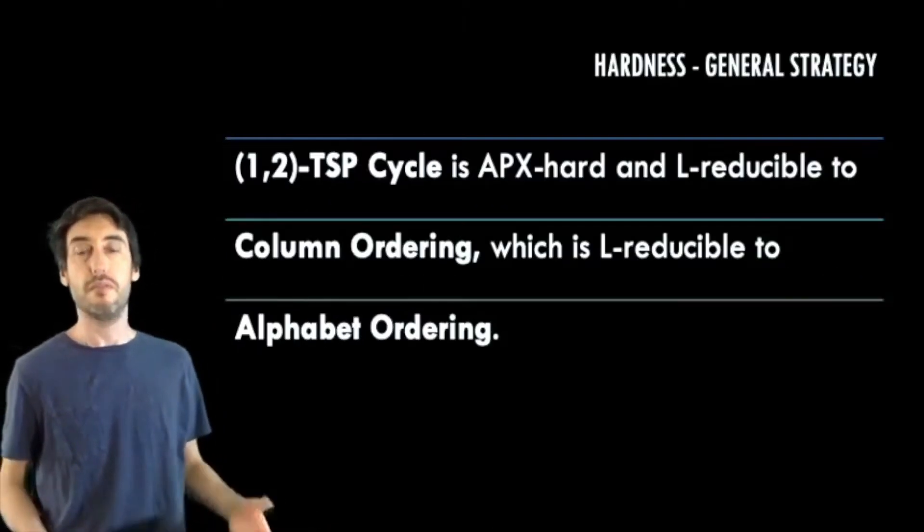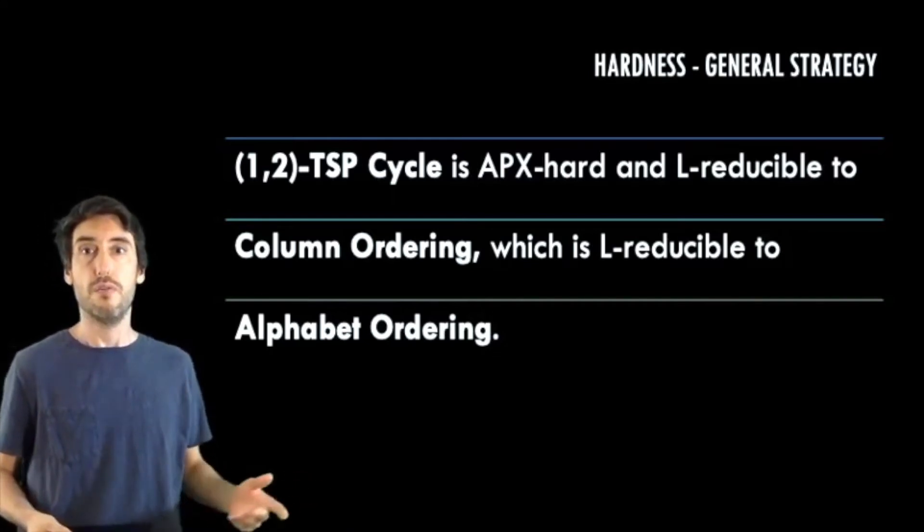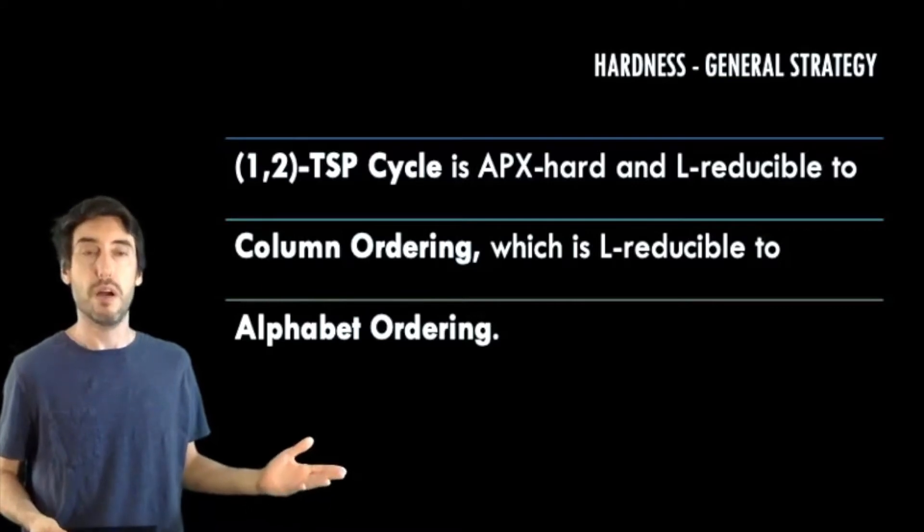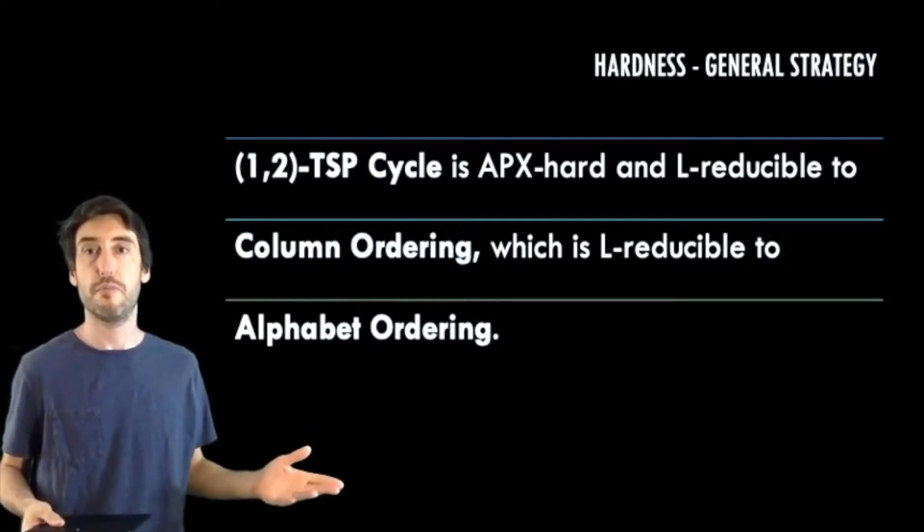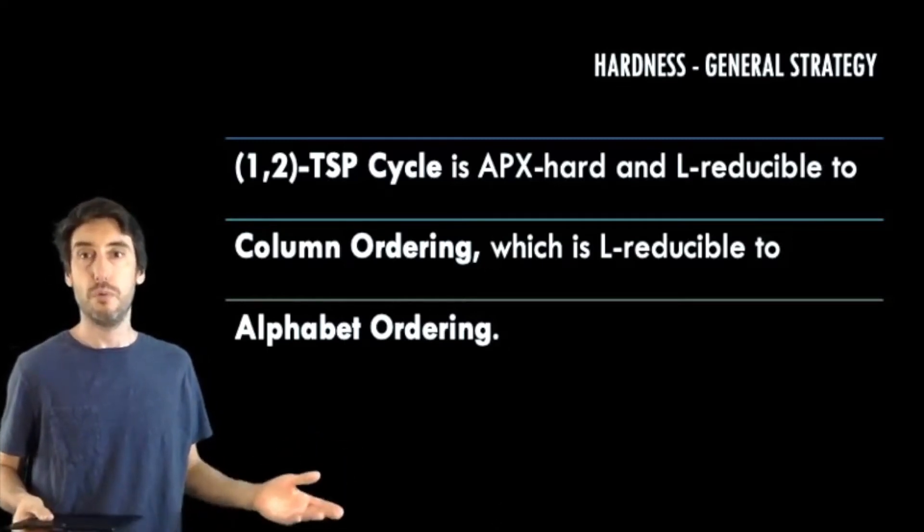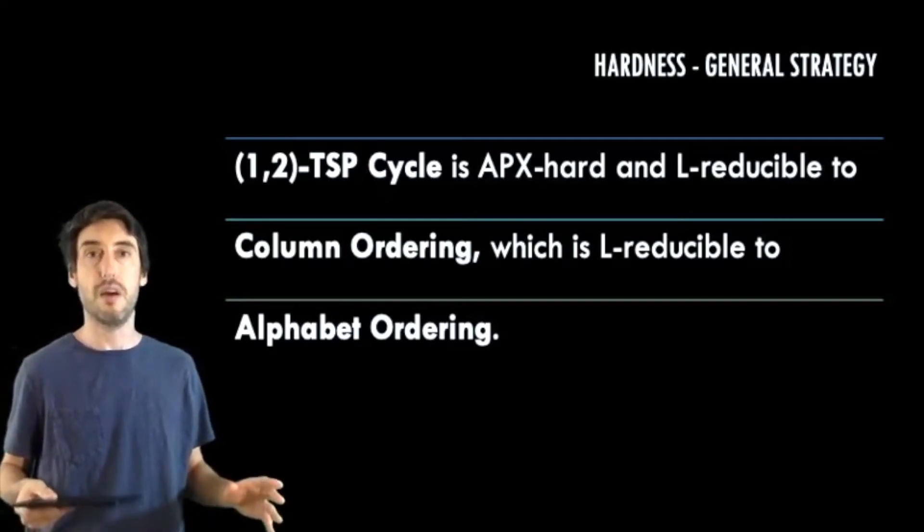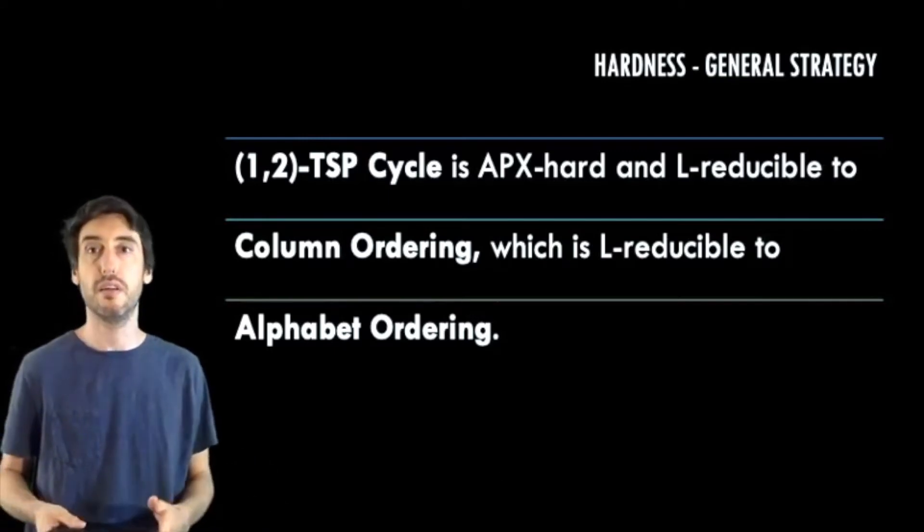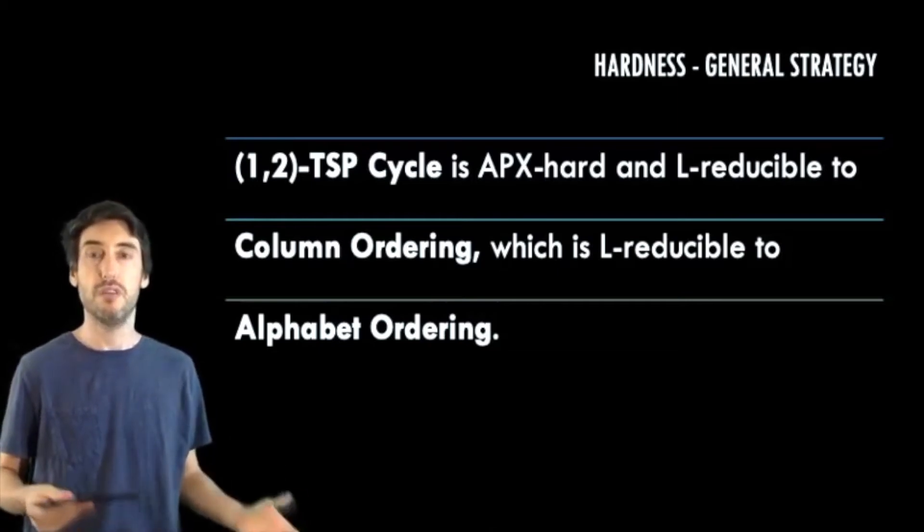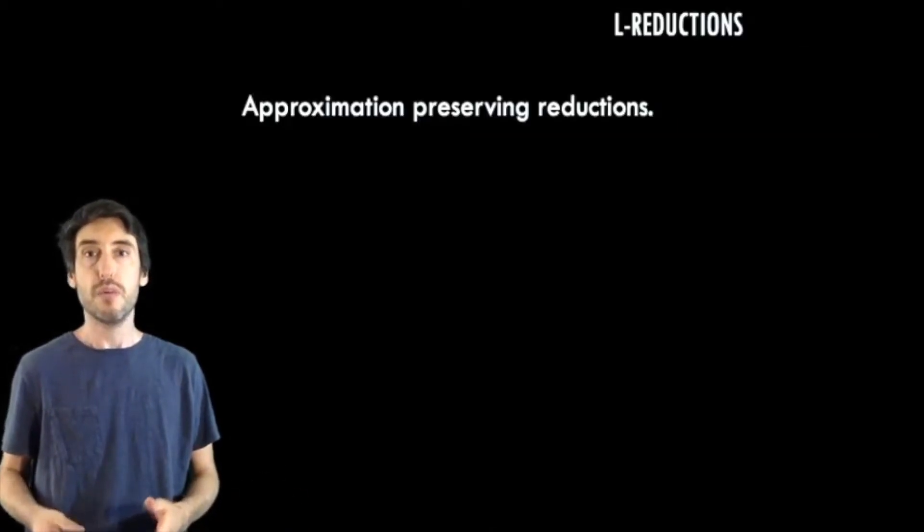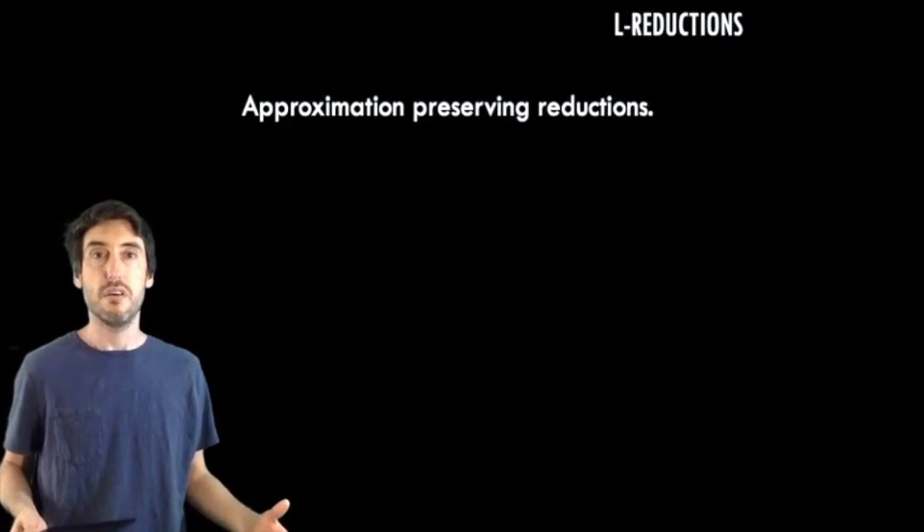So how do we prove these results? So here's our general scheme of proving these hardness results. We're going to begin with an APX hard problem, also an NP hard problem, called 1,2-TSP, or 1,2 traveling salesperson. And through an L reduction, which we're going to describe next, we'll reduce this to a special subset of problems, a special subset of a problem called column ordering. And from this instance of column ordering, we'll perform another L reduction to alphabet ordering. So we won't give an exact definition of what an L reduction is here, but we'll describe the most pertinent details.